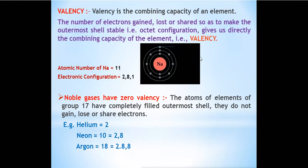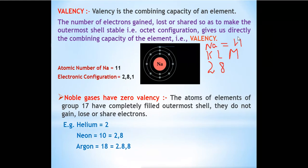In case of sodium, the atomic number is 11. We want to write the electronic configuration in terms of K, L and M shells. In the K shell two electrons can be present, in the L shell eight electrons — that's 10 total. The atomic number is 11, so one electron remains; that one electron goes into the M shell. So sodium has three shells: K shell has two electrons, L shell has eight electrons, and M shell has one electron.